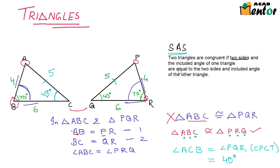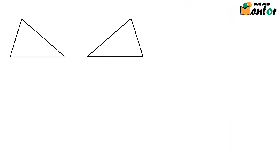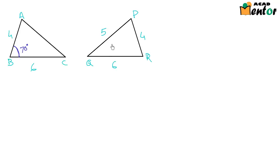Just keep in mind that SAS talks about two sides and an included angle — the angle must be included between the two sides; it cannot be any other angle. So, for these two triangles ABC and PQR again: AB is 4 units, BC is 6 units, PR is 4 units, QR is 6 units, PQ is 5 units. Do you think we can still say triangle ABC is congruent to triangle PRQ as in the last case?